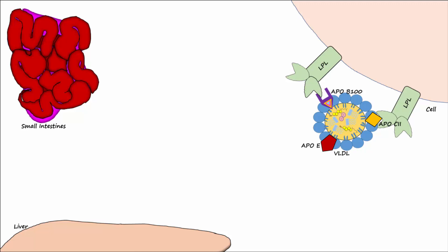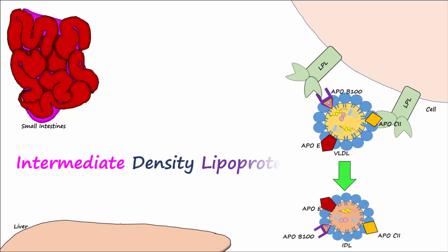As with triglycerides from chylomicrons, the LPL will hydrolyze triglycerides from VLDLs into fatty acids and glycerol that can be used by the cells for energy or for storage. Removal of triglycerides from VLDL results in the production of intermediate-density lipoprotein, or IDL.